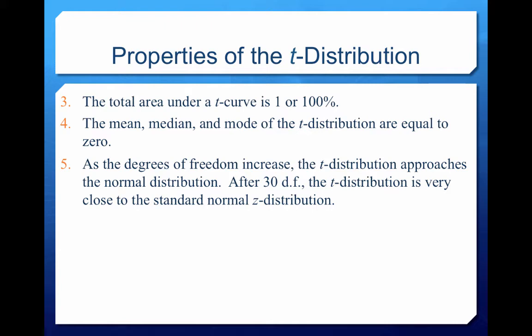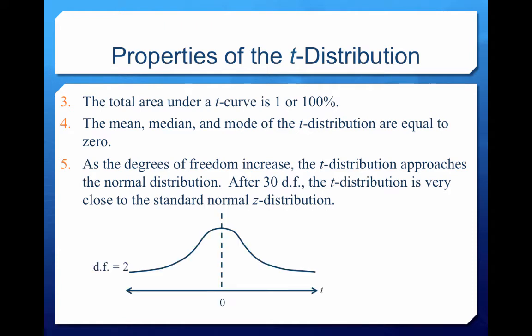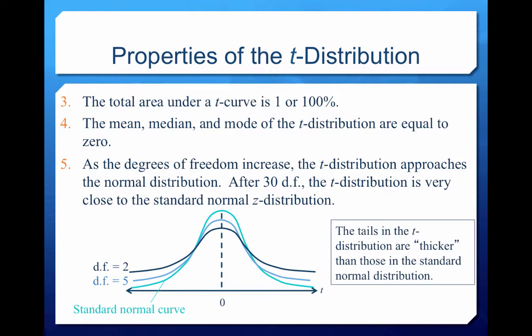This is why we're only going to be using the t-distribution when our sample size is smaller than 30. As you can see with degrees of freedom of 2, it approaches more of a normal distribution as the degrees of freedom increase. The tails in the t-distribution are thicker than those in the standard normal distribution, meaning when the degrees of freedom are small, we're more likely to have events happen further out from the mean.